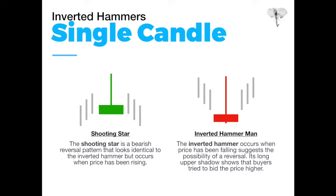Next are inverted hammers — the shooting star and inverted hammer. The color of these candles isn't necessarily that important; the shadow needs to be at least about three times longer than the body. A shooting star is a bearish reversal pattern that looks identical to an inverted hammer but occurs when price has been rising. The bulls are still moving forward, but we can see that the bears are ready to assert dominance, driving price down from its highest point down to its close.